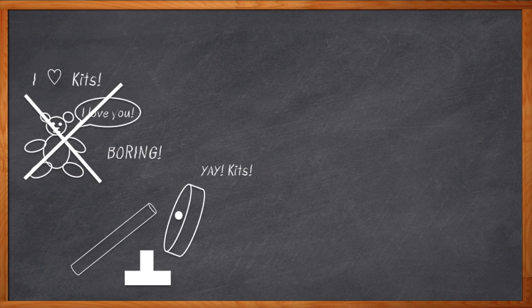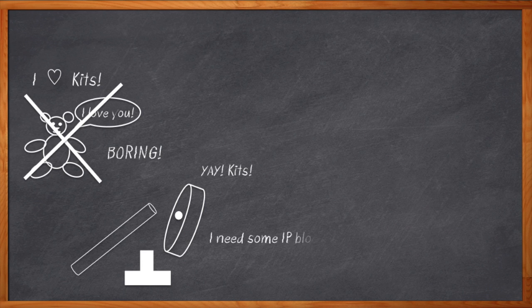So when I get an IP block to use in my design, and it's just plain old black box RTL, it's kind of like when I got that basic toy. What I really need is IP blocks that allow me to tweak and tune to fit my particular application needs.